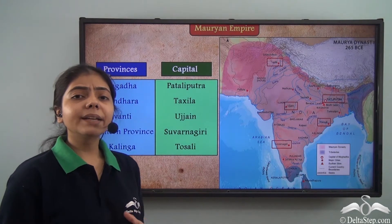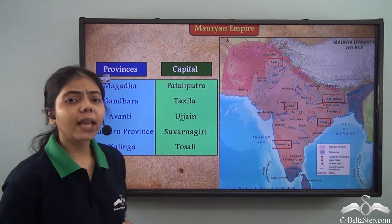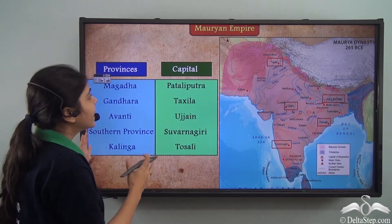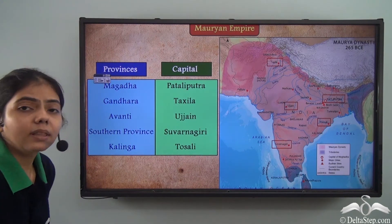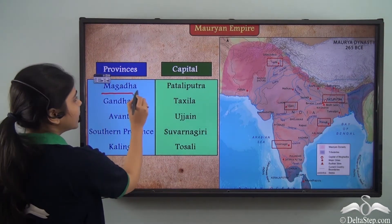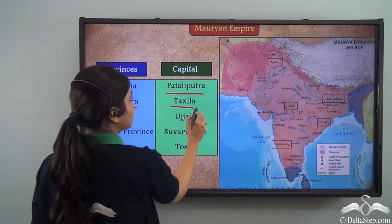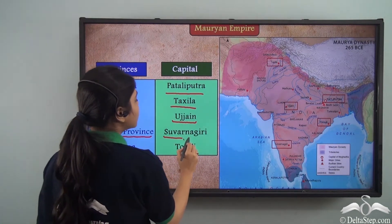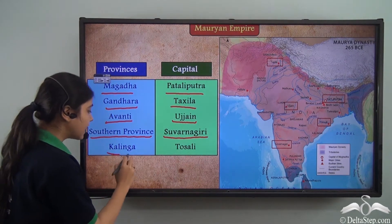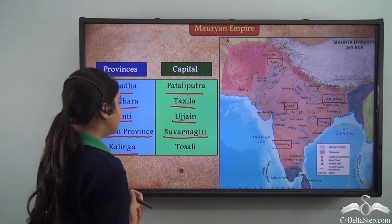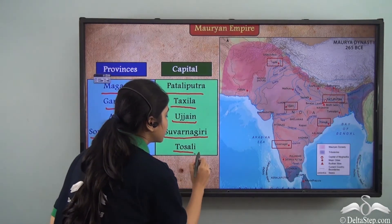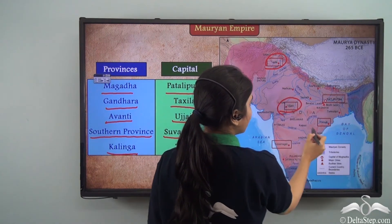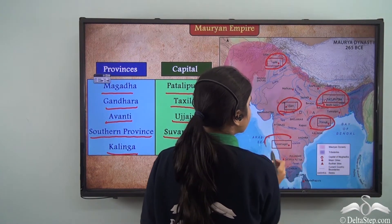The Mauryan Empire was further divided into provinces, similar to the states we have today. The provinces were: Magadha with its capital at Patliputra, Gandhara at Takshila, Avanti with its capital at Ujjain, and the southern province with its capital at Swarnagiri. The last province, Kalinga, was added after it was conquered, with its capital at Tosali.